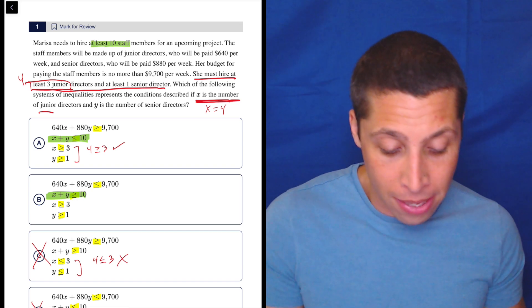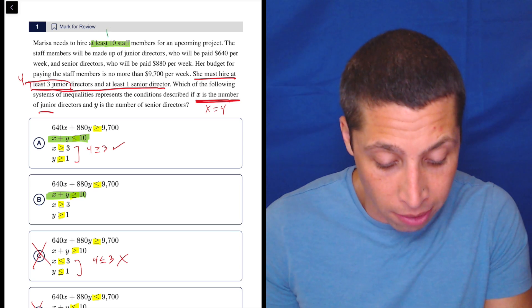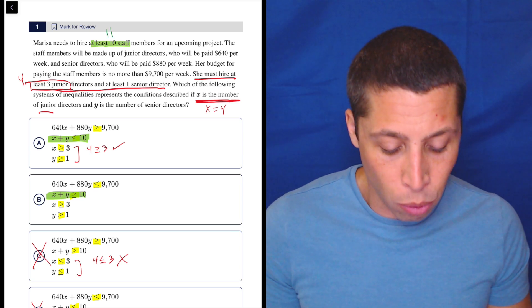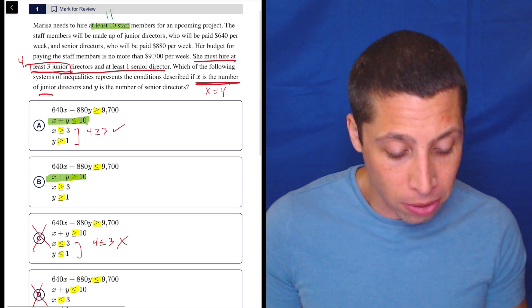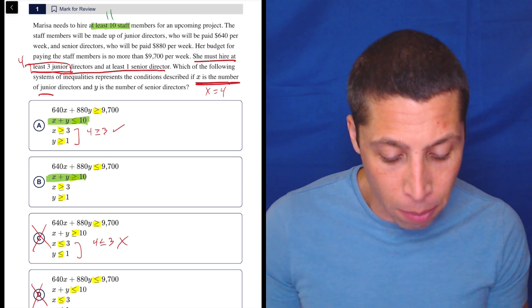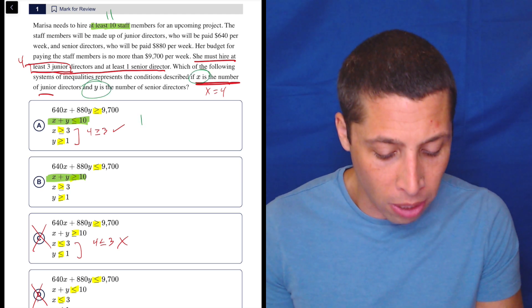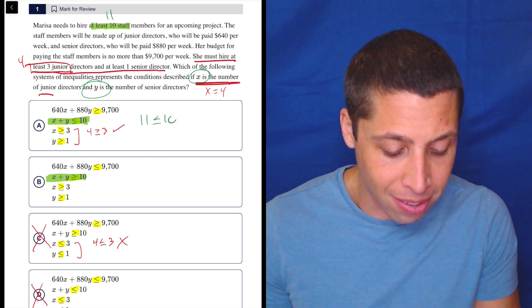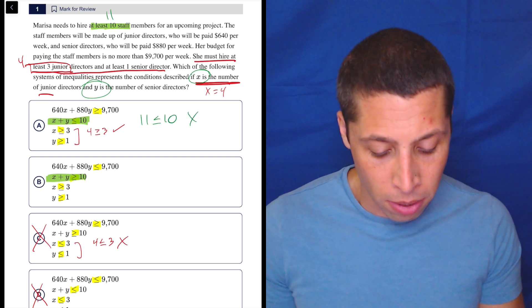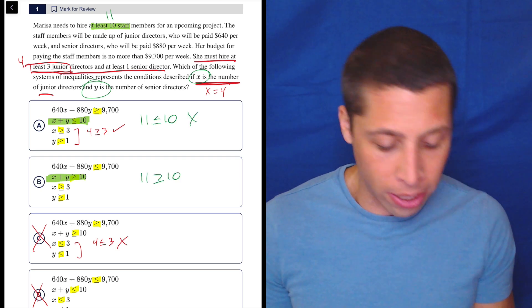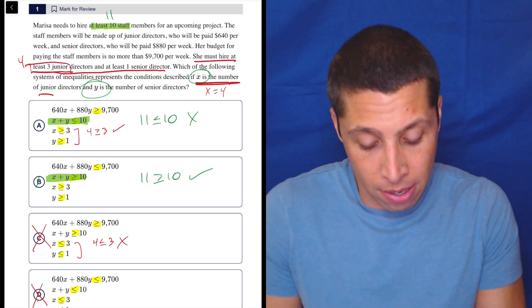So that means she needs to hire like 11 staff members. So which one could be that? Well, the X plus the Y, that's the total number. The X is the number of junior and Y is the number of seniors. So if the total number was 11, is that less than or equal to 10? No, but 11 is greater than or equal to 10. So that seems right. So that's it.